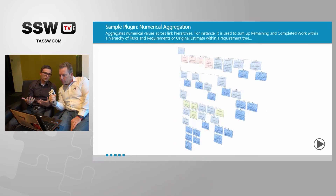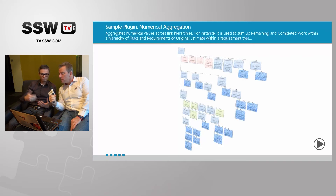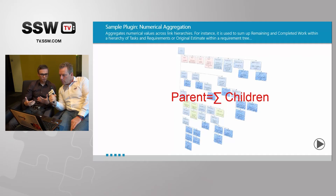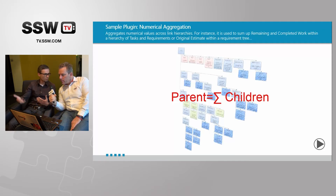The next plugin is numerical aggregation. Imagine a large hierarchy of requirements with effort and estimation fields — you want to aggregate those from children to parent items, to see what's the sum of effort on a feature due to its breakdown into product backlog items. The plugin takes care of all the aggregation and consistency checks, so if some changes were left behind due to TFS updates, it handles it and keeps field values consistent across the hierarchy.